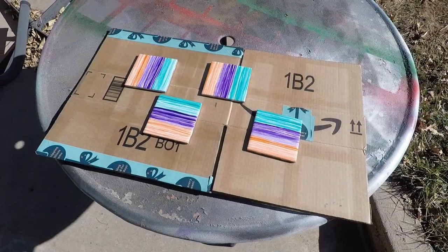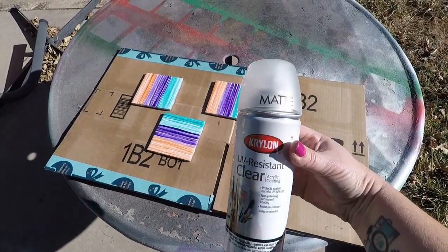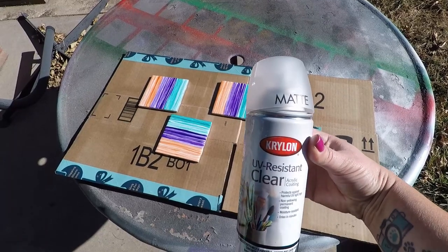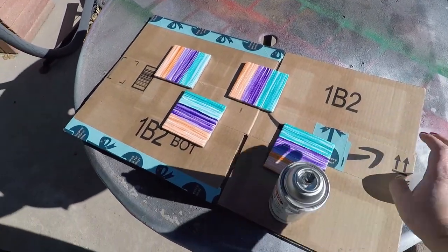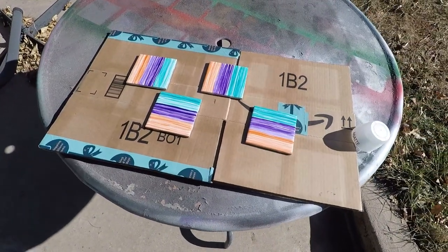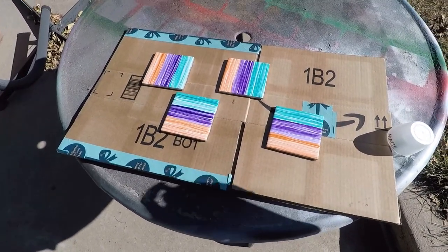Then I took it outside to seal it. I'm going to use this Krylon UV resistant clear spray. It's a matte and it's an acrylic coating. You definitely want to start with a very light coat because otherwise you can move the ink.